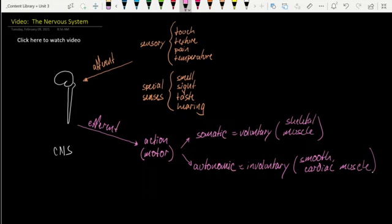Of course, under the regulation of the CNS. We can further subdivide the autonomic into two different classes. And this is something that we'll talk about in a later video. So, the sympathetic and the parasympathetic systems.